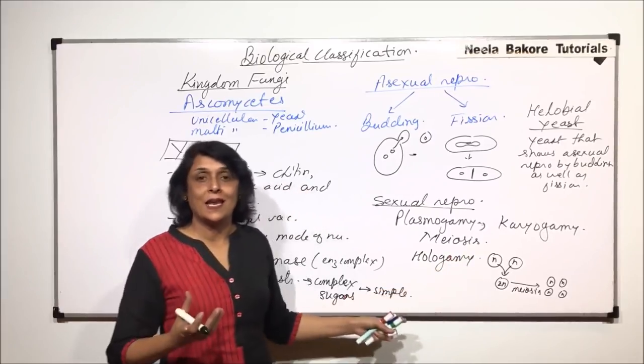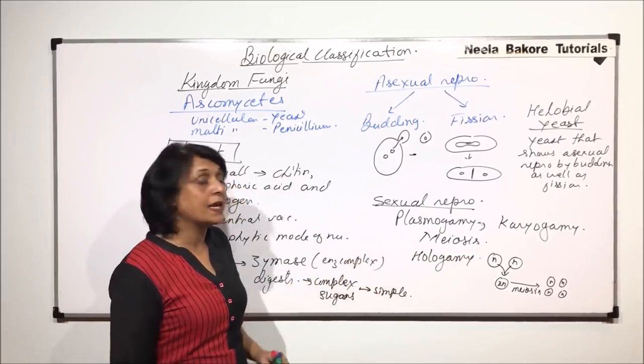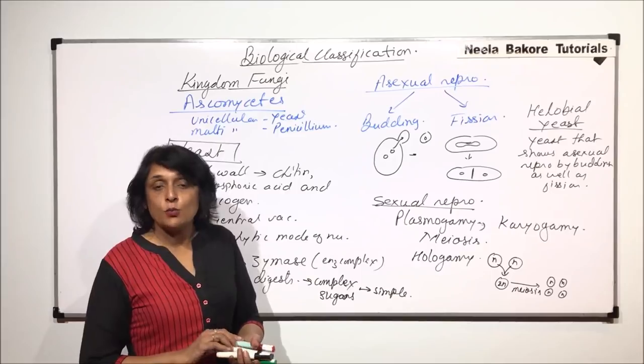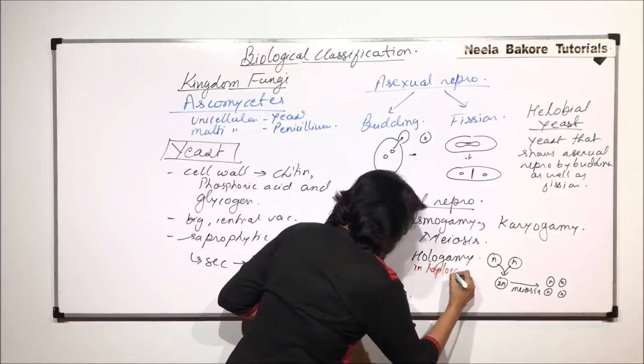So, because these two cells were leading normal life, acting like organisms and these two complete cells are fused, we call it hologamy. Fusion of the whole cell, that's why. But here they are acting as gametes. This is seen in case of the yeast which are normally haploid. In haploid yeast.